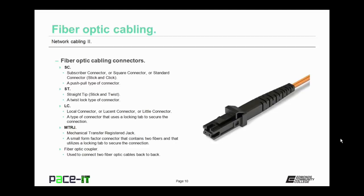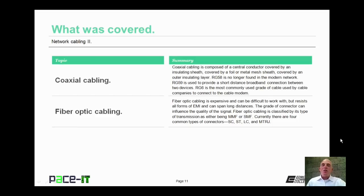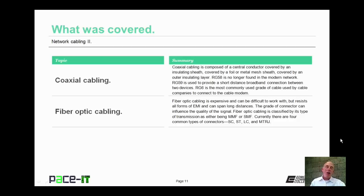You might also find a fiber optic coupler, which is used to connect two fiber optic cables back to back. That concludes this session on Network Cabling Part 2. I talked about coaxial cabling and concluded with fiber optic cabling. On behalf of PaceIT, thank you for watching this session.